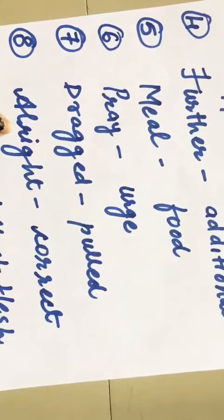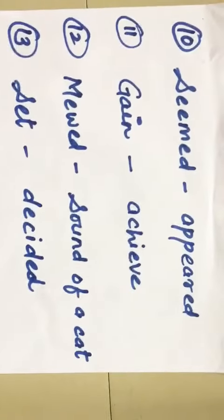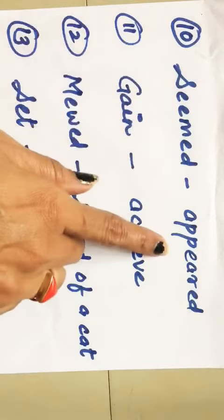Number 8: All right - correct. Number 9: Fleshy - full of flesh. Number 10: Seemed - appeared.